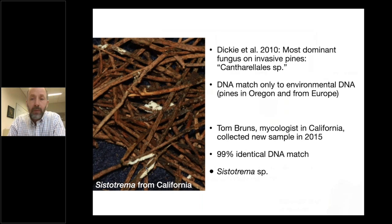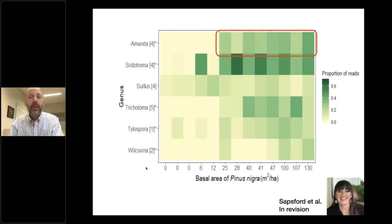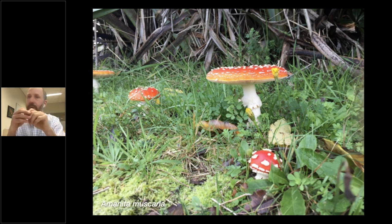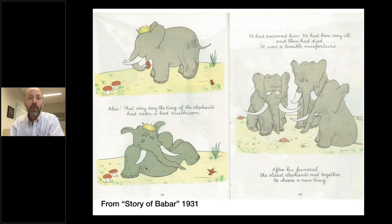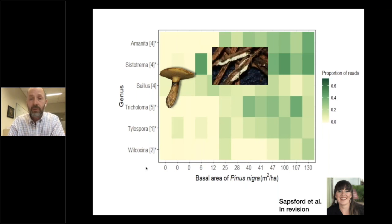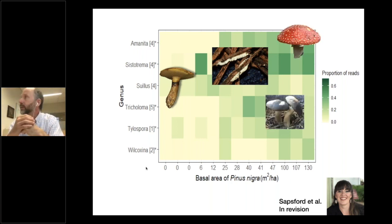The last fungus I'll mention is Amanita — the pretty one. This is the one that everybody thinks of as the classic mushroom. It's only present once the pine has established as mature trees, so it's really important in the later stages of invasion, but not actually driving the invasion front. This is also the one that shows up in children's books as the iconic fungus everybody knows. Overall, what we're seeing is a succession where Suillus comes in very early, driving the invasion front, but then being replaced or overcome by Cystoderma, which is really the dominant player in the ecosystem, and then over time, an accumulation of other species of fungi.